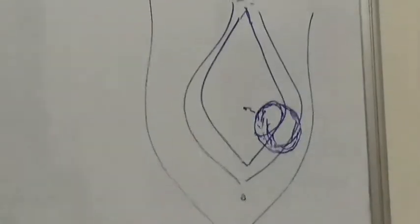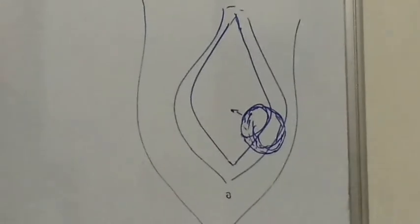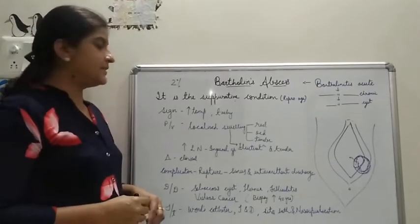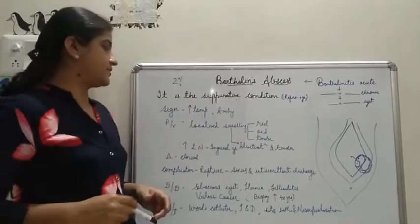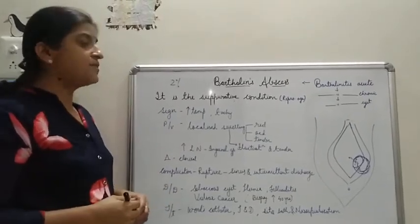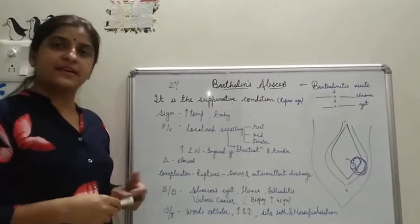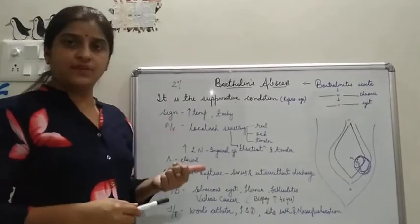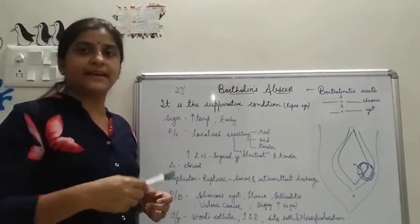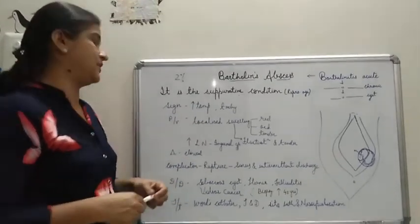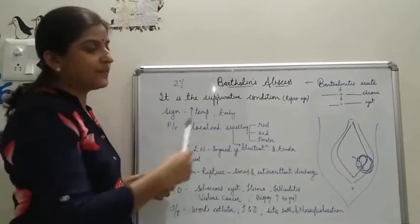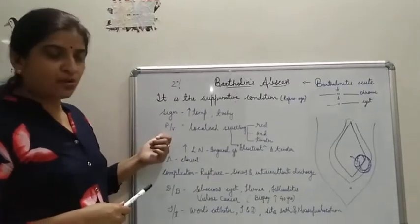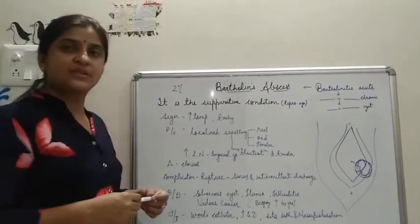Now the signs. After looking at symptoms, we have to see the signs. There is rising temperature, and due to fever we will find tachycardia—that is increased pulse rate. After that, the local signs: per abdomen we will not find anything serious, it will be normal. So per vaginal examination becomes very important.